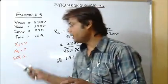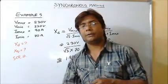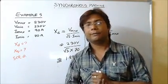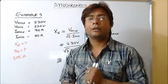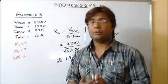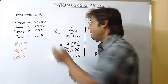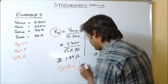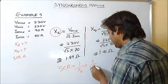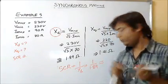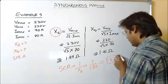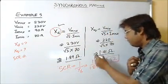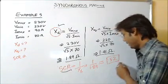Coming to the short circuit ratio SCR, we know that SCR equals IF at rated voltage on open circuit divided by IF at rated short circuit, which is also equal to 1/Xd. Since Xd = 1.89 ohms, SCR = 1/1.89 = 0.52. So the final answers are: Xd = 1.89 ohms, Xq = 1.41 ohms, and SCR = 0.52.